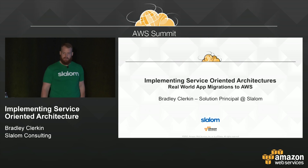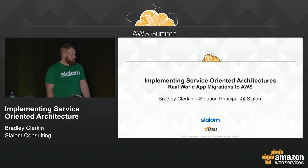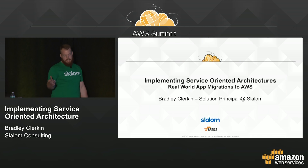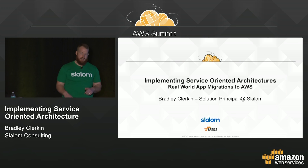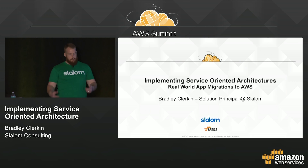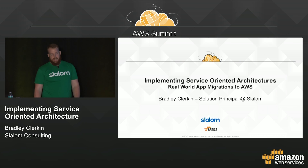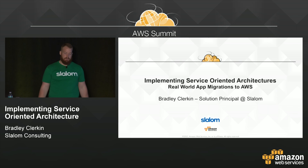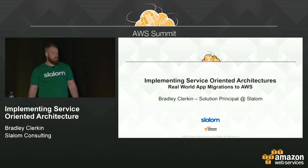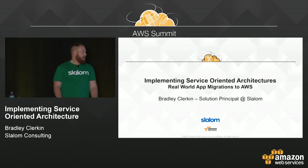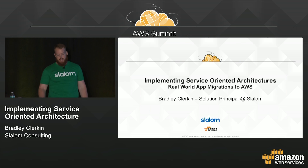Hi everybody. Thank you for coming to listen to me speak today. It's definitely an honor. This presentation is titled Implementing Service-Oriented Architectures on the mobile app, but really what I'm going to be talking about is real-world app migration. My name is Brad Clerken. I'm a solution principal with one of AWS's premier consulting partners, Slalom.